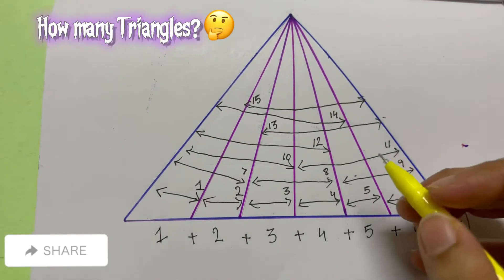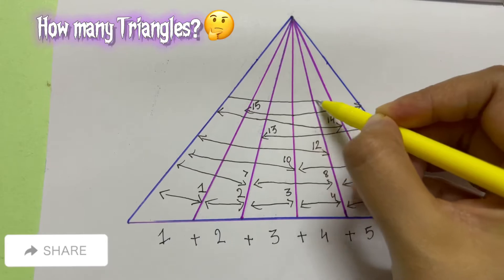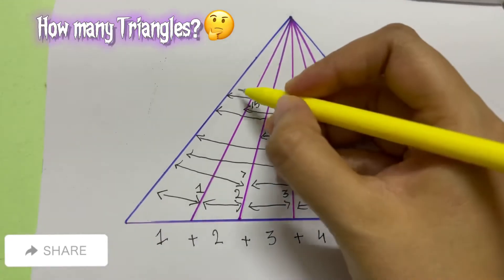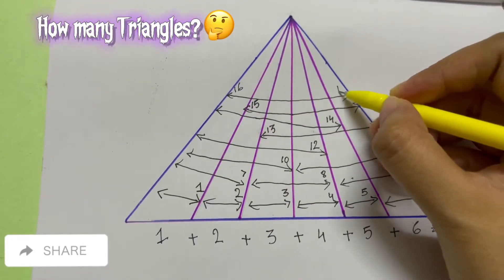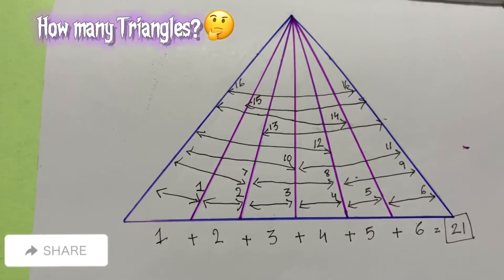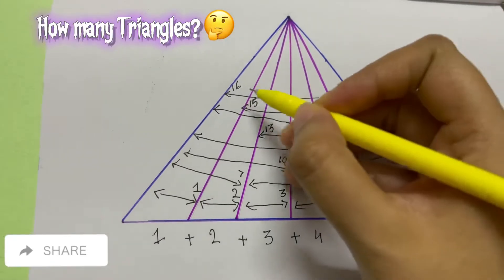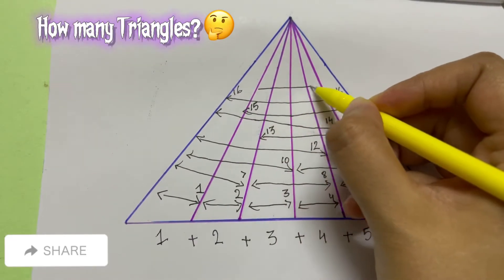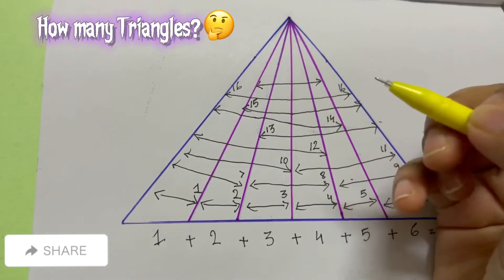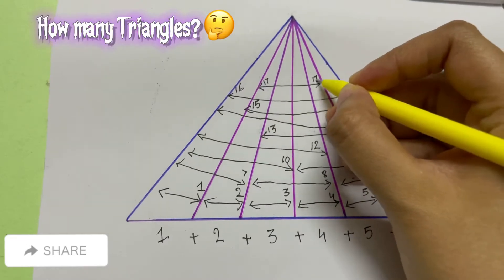So I will have my sixteenth triangle now — the main triangle, from here to here. This is my sixteenth triangle — that is the big main triangle. And then the seventeenth triangle is inside, from here to here. This is my seventeenth triangle.